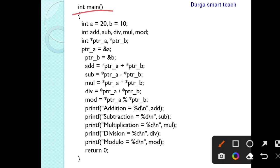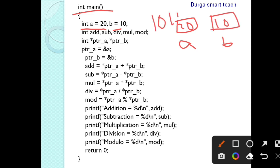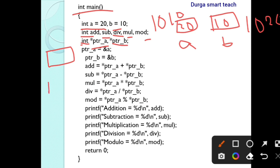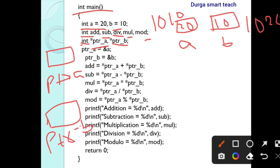Let's see one example program. In int main, int a equals 20 and b equals 10. a is stored at memory location 1010 and b at memory location 1020. We declare variables: int add, sub, div, mul, mod. Next, we declare pointer variables star ptr_a and star ptr_b. Memory is allocated for ptr_a and ptr_b. These pointer variables store the address of another variable, not the value.